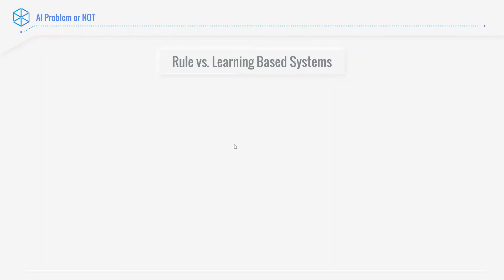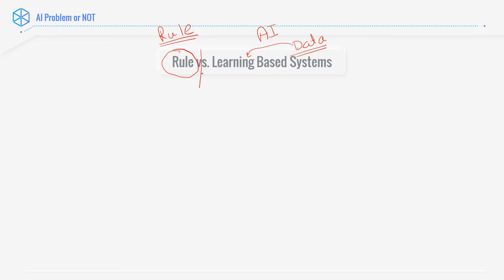Let's start understanding what is a problem which could be AI and what is a problem which can be solved by using rules. This slide will allow us to understand the exact difference between AI-based systems and rule-based systems. AI is artificial intelligence. The intelligence of AI comes from data. AI systems learn from data and that's why they are called learning-based systems — whether it is machine learning, deep learning, or anything else. If you are hard-coding something, then that's a rule-based system.